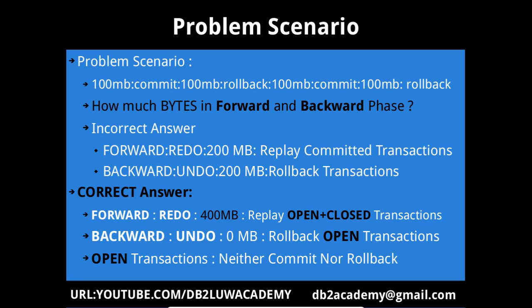The correct answer is: the forward phase is the redo phase and it will redo all 400 MB — it replays the complete open plus closed transactions. The key word here is 'open plus closed.' The backward phase will undo or roll back only the open transactions. In our scenario, the backward phase will actually not be present because all transactions are closed — every 100 MB transaction is either committed or rolled back. An open transaction is one that is neither committed nor rolled back.